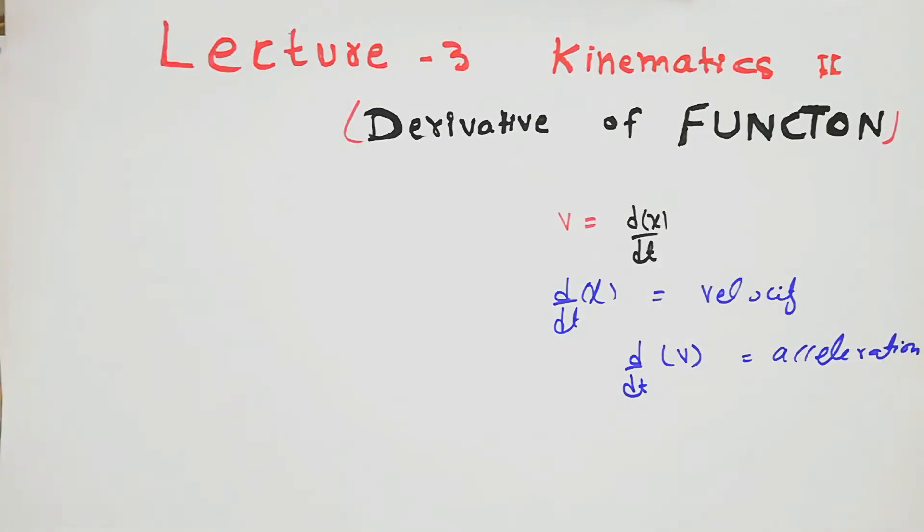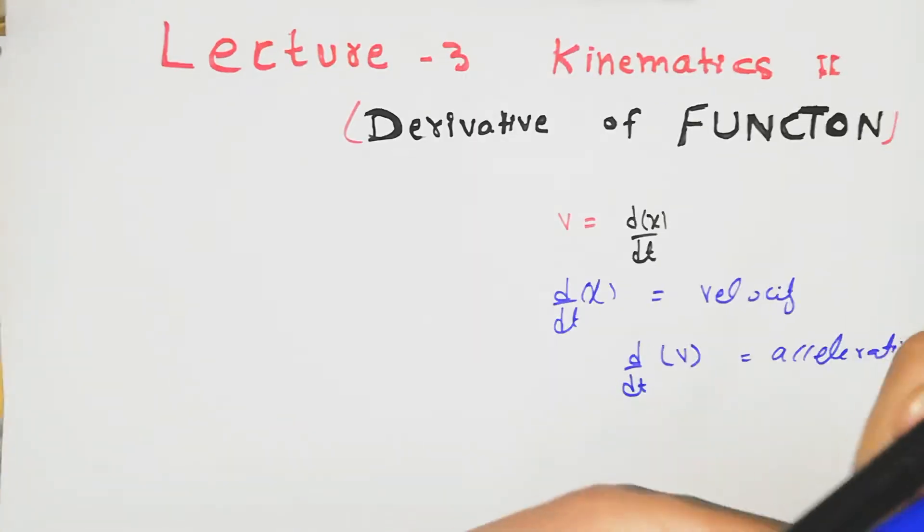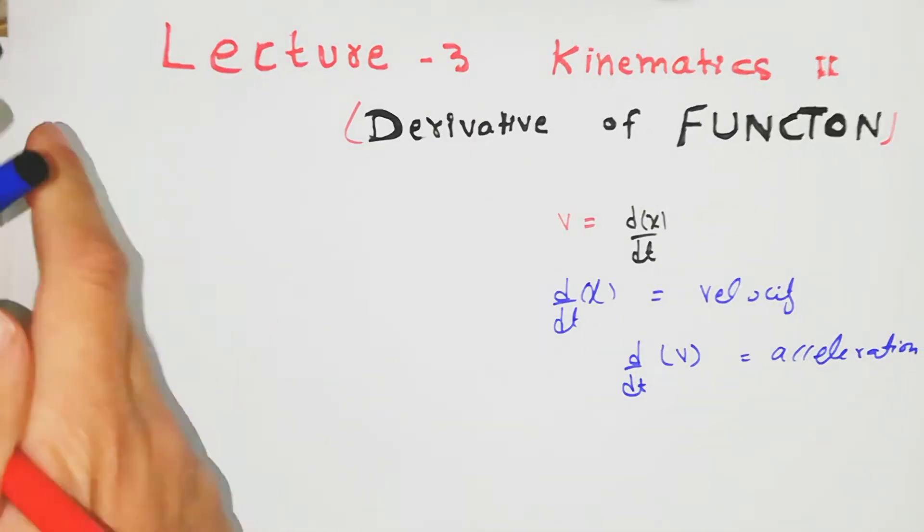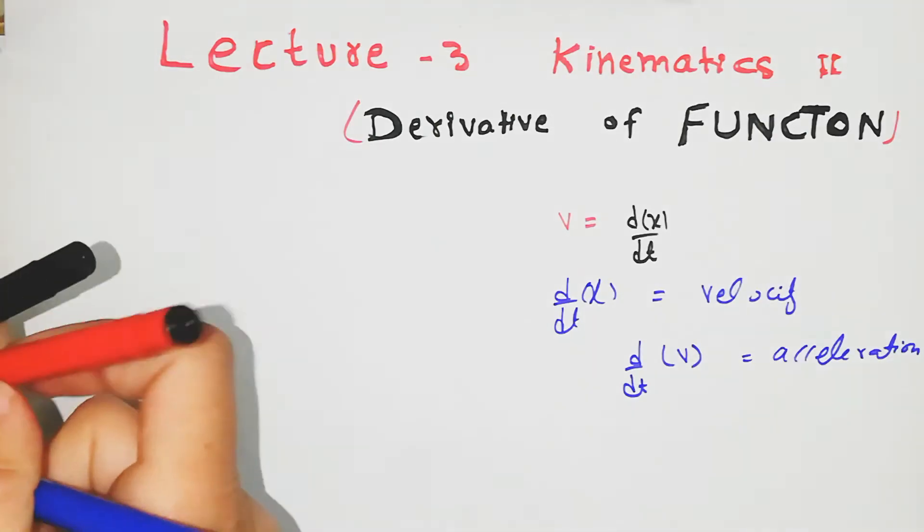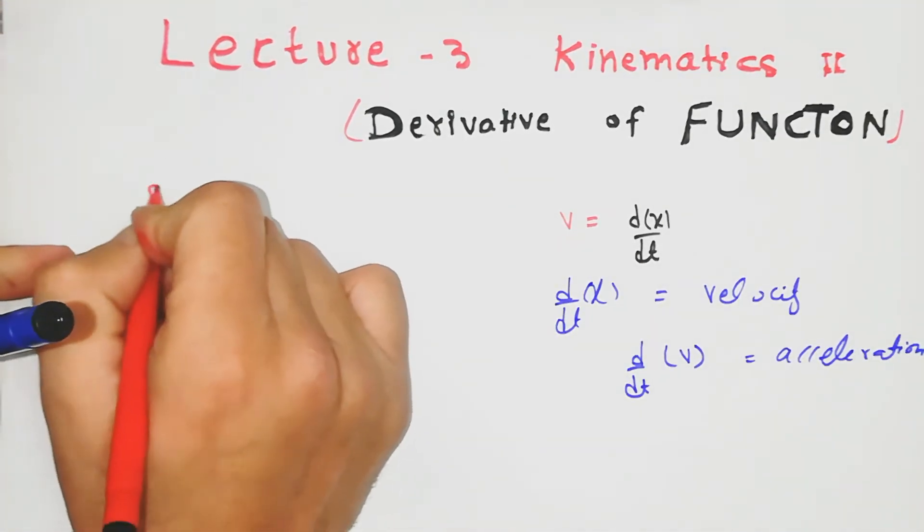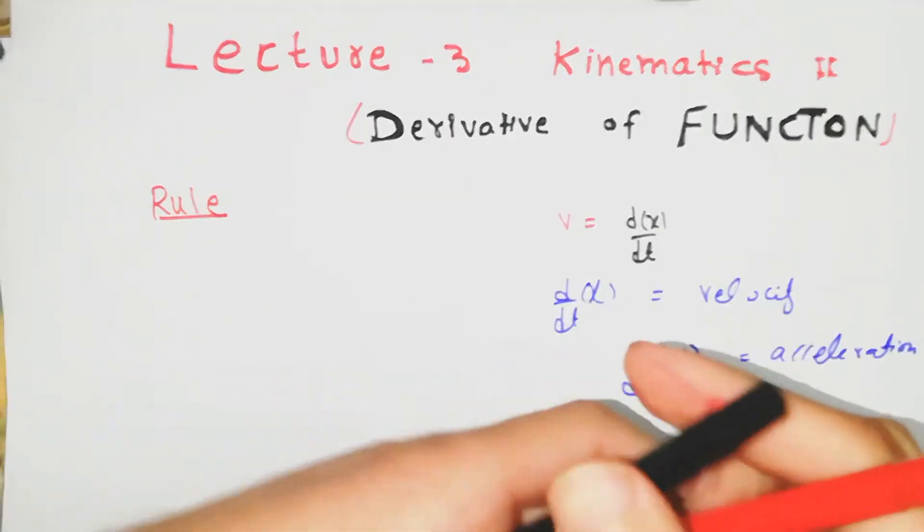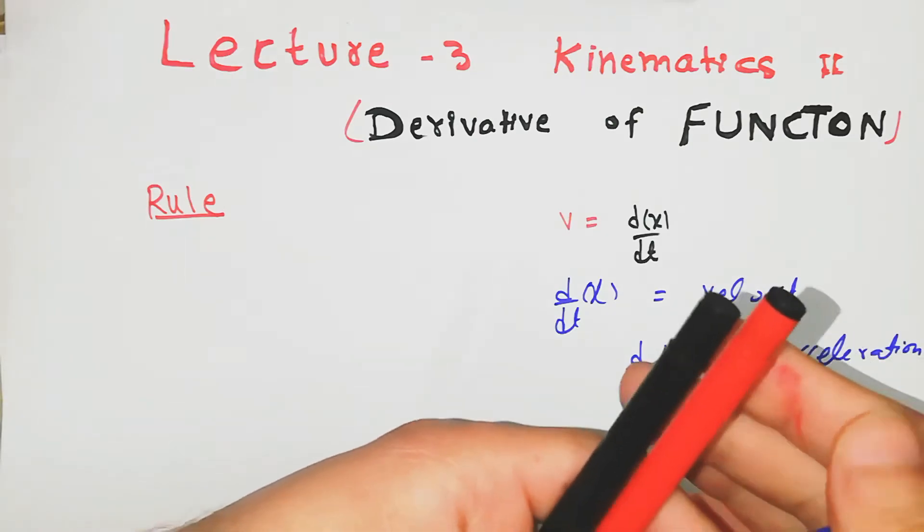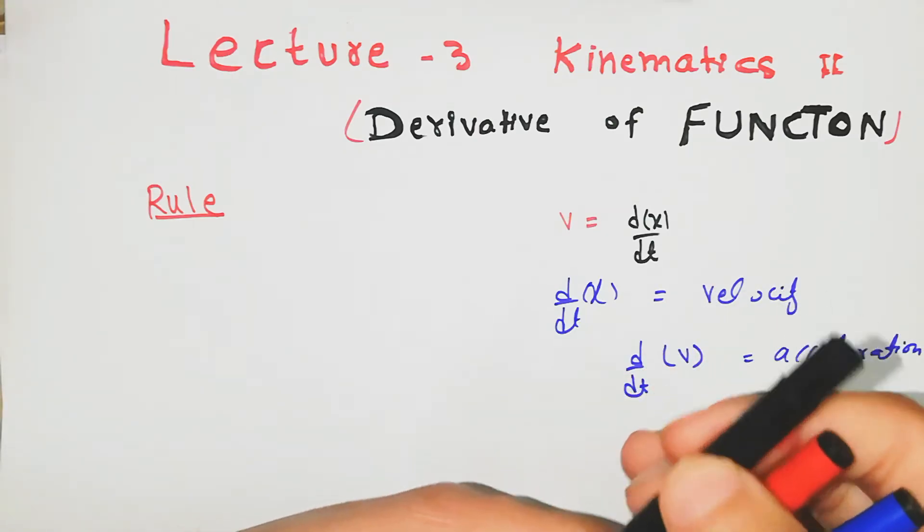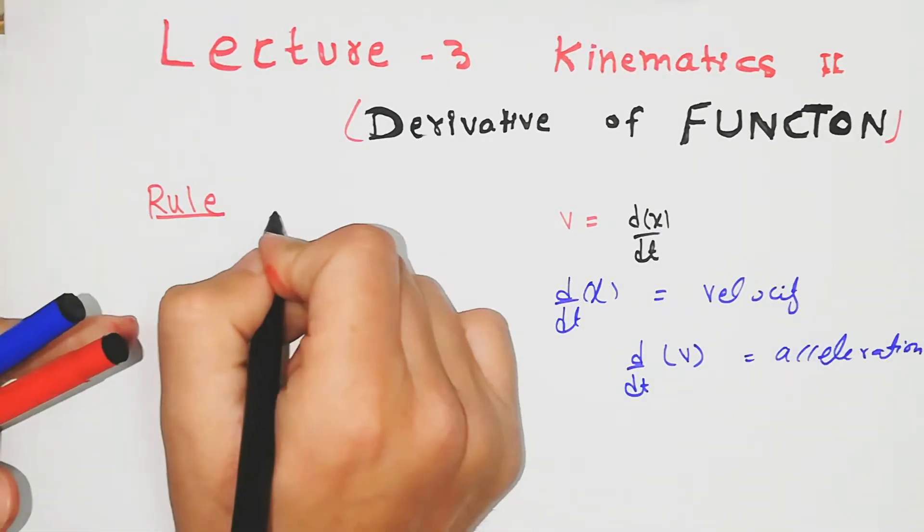If we have a constant number and apply derivative, then it will be zero. Here we have different formulas or rules. First rule we have is the power rule.